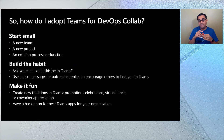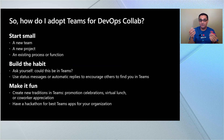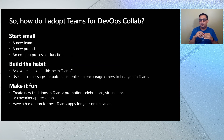I hope this has got you excited about how to adopt this in your own org — here are some ideas. Start small: do all your collaboration inside Teams for a new team that's starting off, or for a new project, or even just for a process or function. Then build the habit — whenever you're having a discussion, could this be inside Teams? Use status messages or automatic replies to encourage people to find you in Teams. When the habit starts to build, get more people to buy in by creating new traditions in Teams: promotion celebrations, virtual lunches, Icebreaker, and co-worker appreciation. And once your organization has adopted this more, think about doing a hackathon to build custom apps for the needs of your own organization.